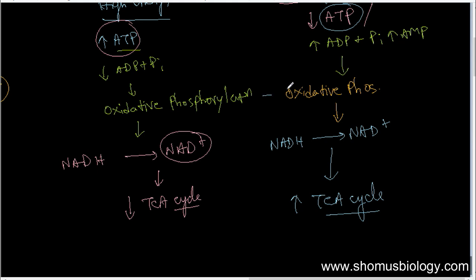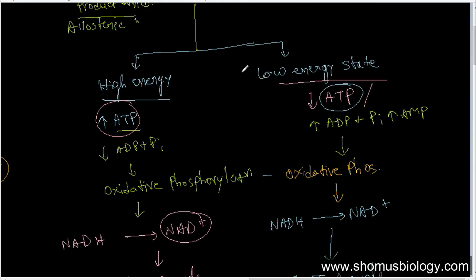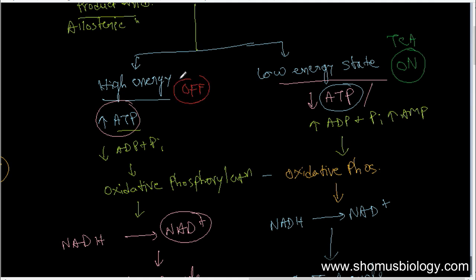So oxidative phosphorylation and NADH conversion to NAD+ are common to both states. The key difference is the body's energy level: in the low energy state, NAD+ signals the TCA cycle to turn on — it's a green light. In the high energy state, it causes the TCA cycle to turn off. This is the regulation of the TCA cycle.